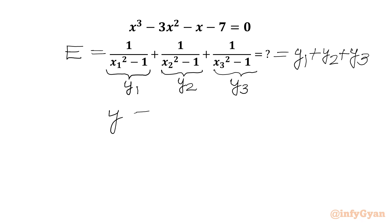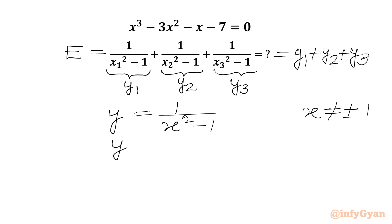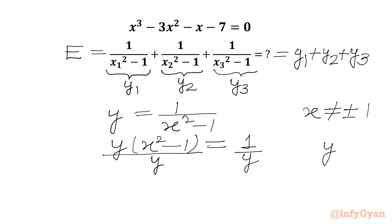In general form, y equals 1/(x² - 1), where x cannot equal plus or minus 1. Cross-multiplying both sides by (x² - 1), we get y times (x² - 1) equals 1. Dividing both sides by y, where y cannot equal 0, we get x² - 1 equals 1/y.